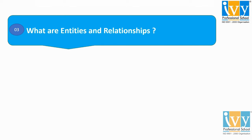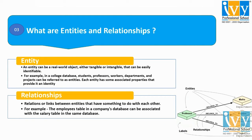Question 3: What are entities and relationships? An entity can be a real world object with an existence. It can be either tangible or intangible that can be easily identified. In the diagram, it is given a college database in which students, professors, workers, departments, and projects can be referred to as entities. Each entity has some associated properties that provide it an identity.